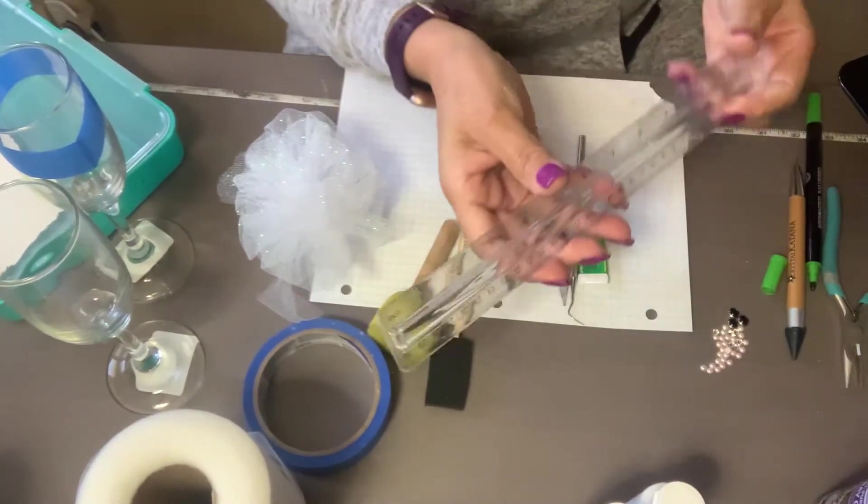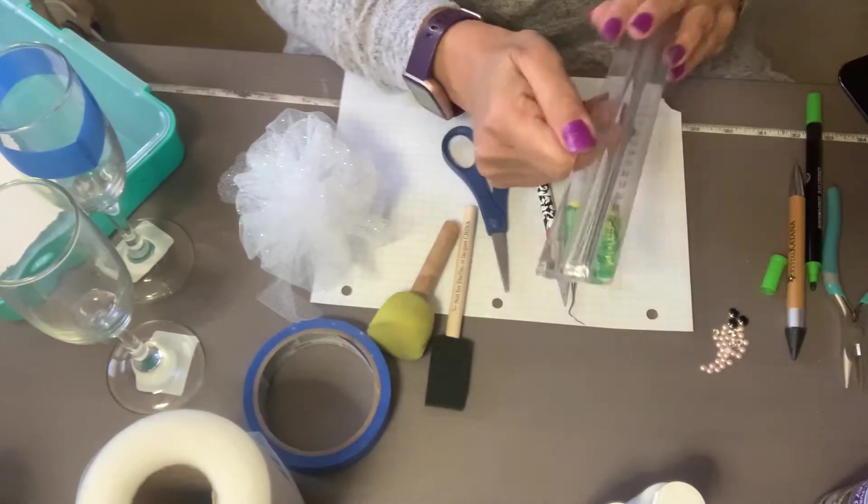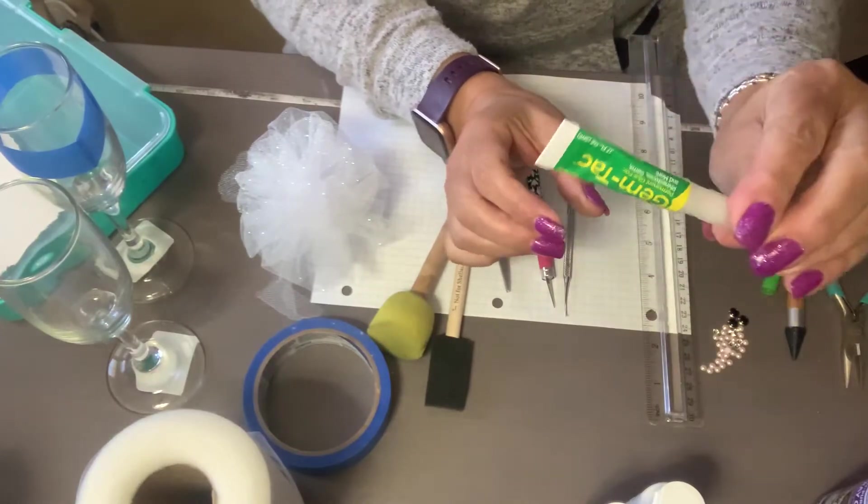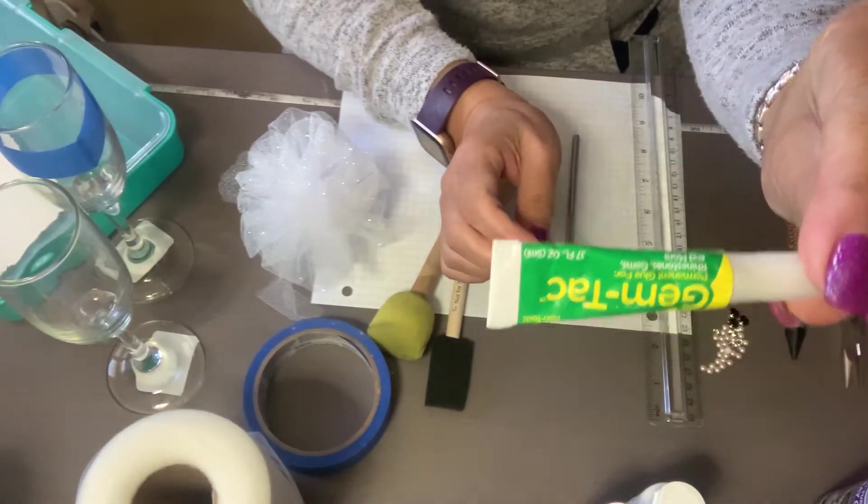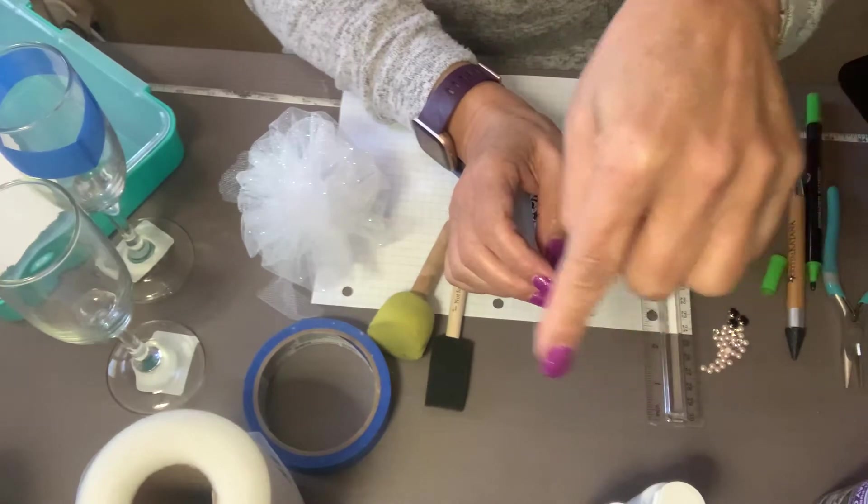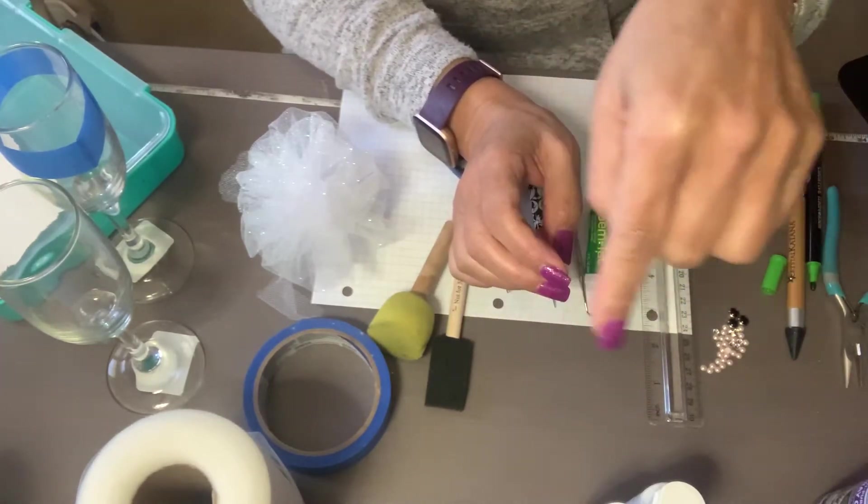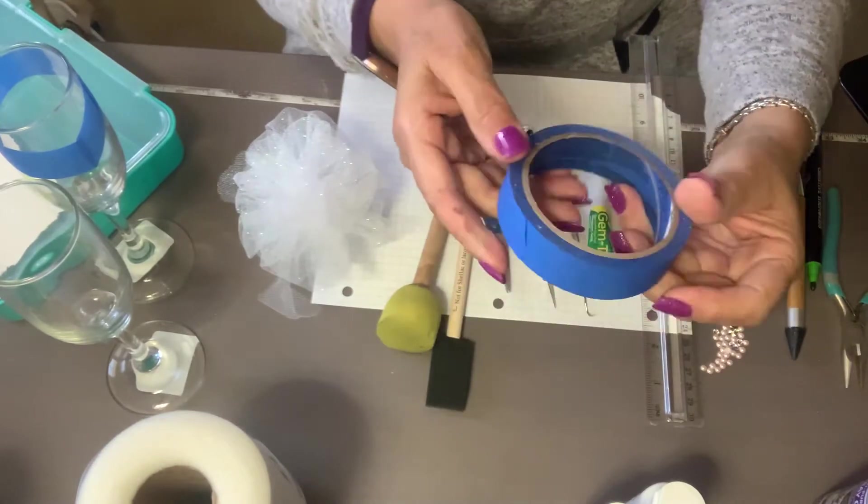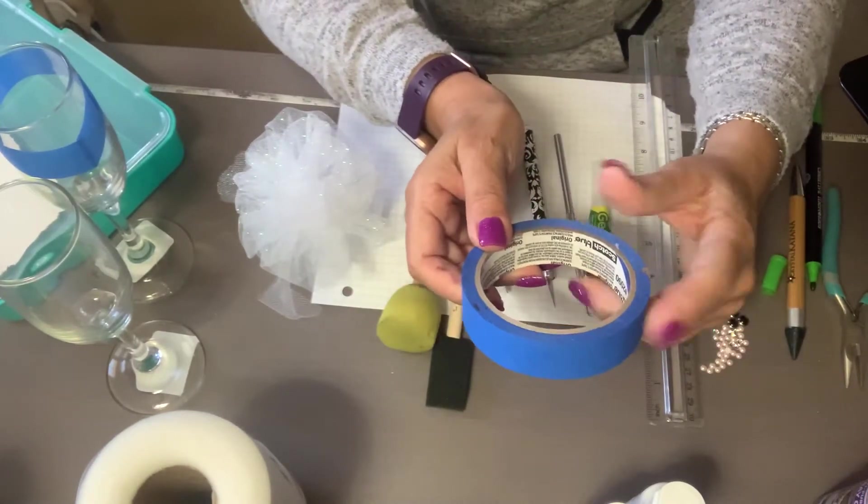You're going to need a ruler, you're going to need a jewelry glue. I really like this one, and I'm going to be putting the links in the description of all the products that I'm using. This is a painter's tape.